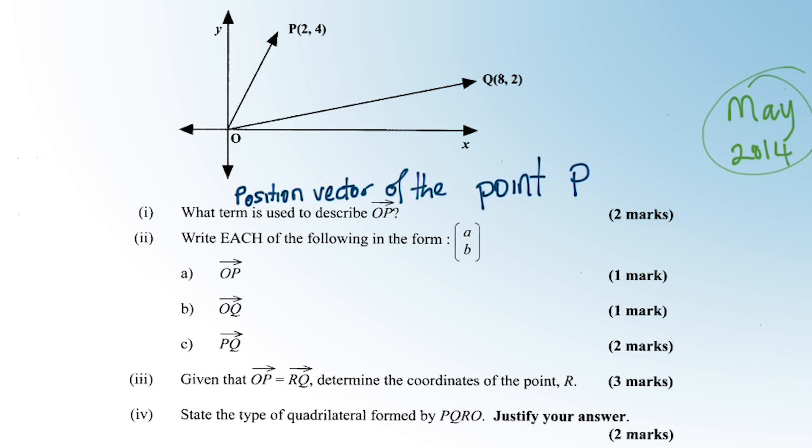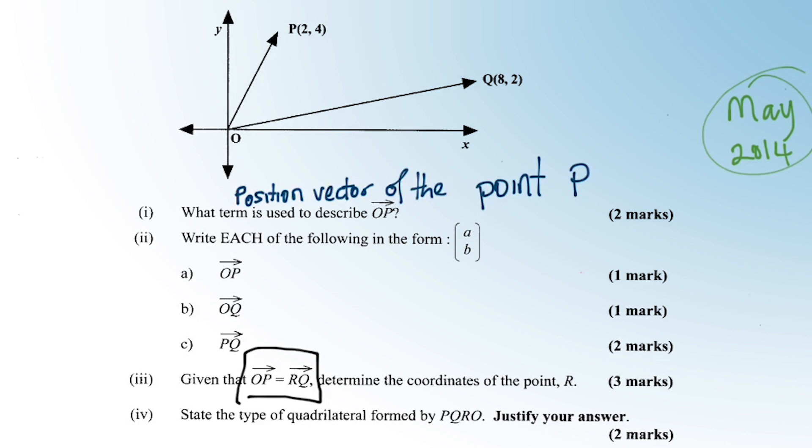Given that OP is equal to RQ. So we get introduced to a new letter there, realize that R was never mentioned before. Determine the coordinates of the point R. So we want the coordinates of that new point R, but they're giving us a condition. OP, which looks like this, is equal to RQ. So you can actually get a little visual. And it's a side tip. When you're doing vectors, if they don't give you a sketch, you draw a sketch. You can help break down the question.